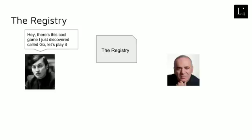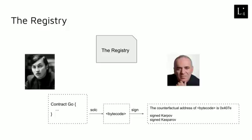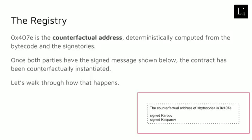This is the API of the registry contract. We have the storage, which contains a mapping from counterfactual addresses to deployed addresses, and we have two public functions: one to look up the mapping and one to modify it. Let's replay the example from before. Karpov says there's this cool contract called Go, let's play it. What actually happens is they want to counterfactually instantiate the contract which contains the logic for Go. The contract gets run through a compiler to produce some bytecode. The bytecode gets placed in a message that gets signed, and the message says: the counterfactual address of bytecode is 0x407e — sign Karpov, sign Kasparov. 0x407e is the counterfactual address, and it's deterministically computed from the bytecode and from the signatories of the message. So we know in advance what the counterfactual address is before anything gets deployed. Once both parties have this signed message, we can say that the contract has been counterfactually instantiated.